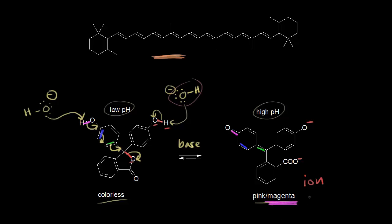If we look closely at this ion, we can see why it's colored. Look at the conjugation that's present — there are all kinds of alternating single and double bonds throughout. Pretty much the entire ion is conjugated, so we have this extensive conjugation which allows the ion to absorb in the visible region, and that's why it appears to be a pinkish color.